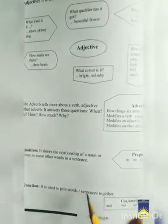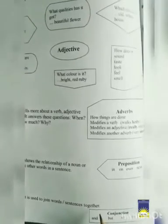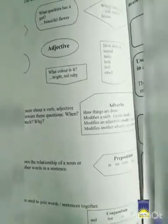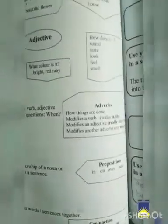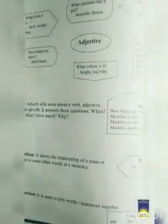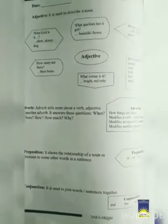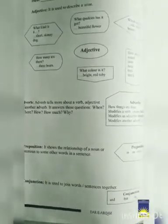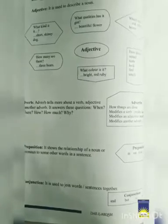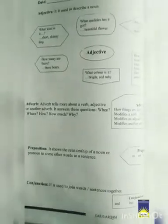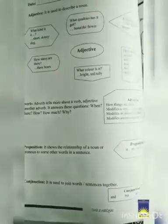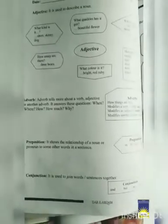Conjunction use hote hai do words ko ya do sentences ko join karne ke liye. Jaise and, but, so, or, because. For example, I am using one conjunction in a sentence that I cannot attend school today because I am not feeling well. So, the word because is joining both the sentences. Clear? I hope that you are clear with it.